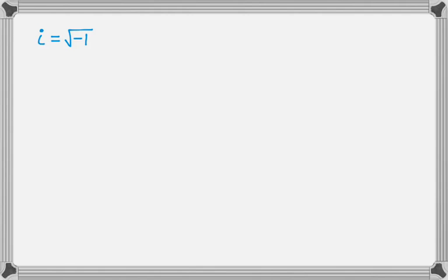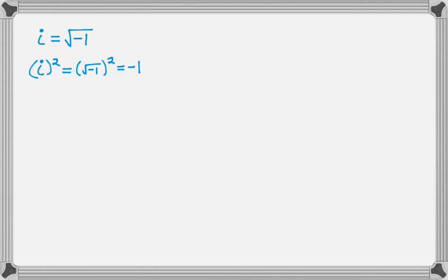i to the first is just the square root of negative 1. So let's square it. i squared is just going to be equal to the square root of negative 1, squared. When you do that, you just end up with negative 1. So i squared is equal to negative 1.